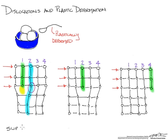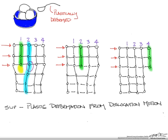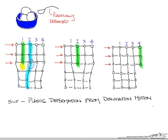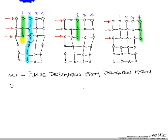The definition of slip is plastic deformation produced by dislocation motion. Another concept associated with dislocations is this idea of dislocation density.